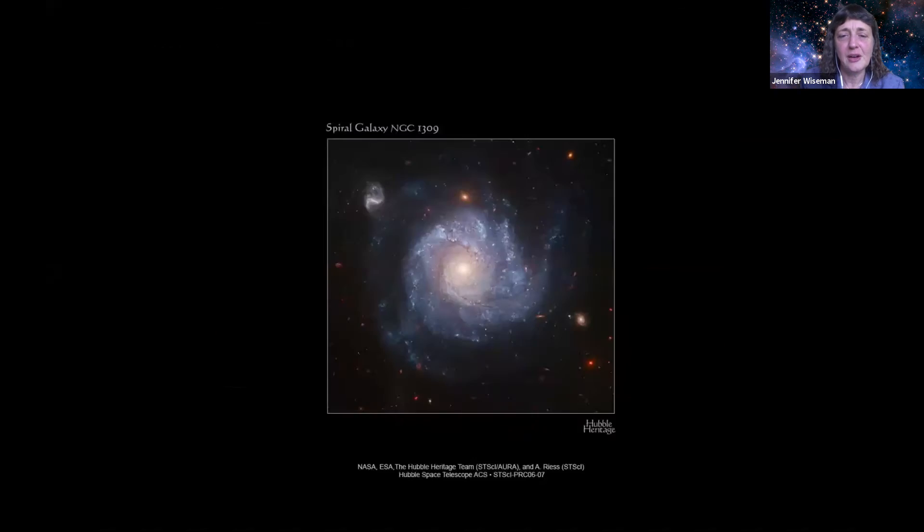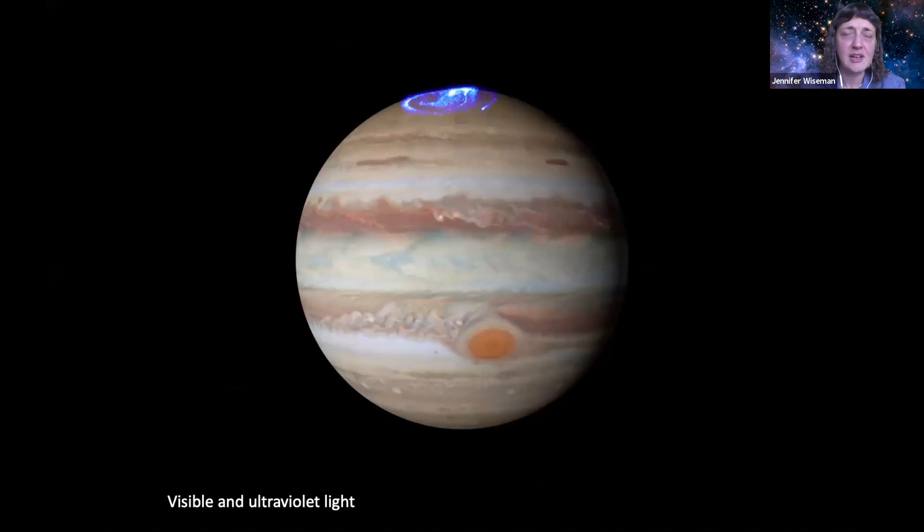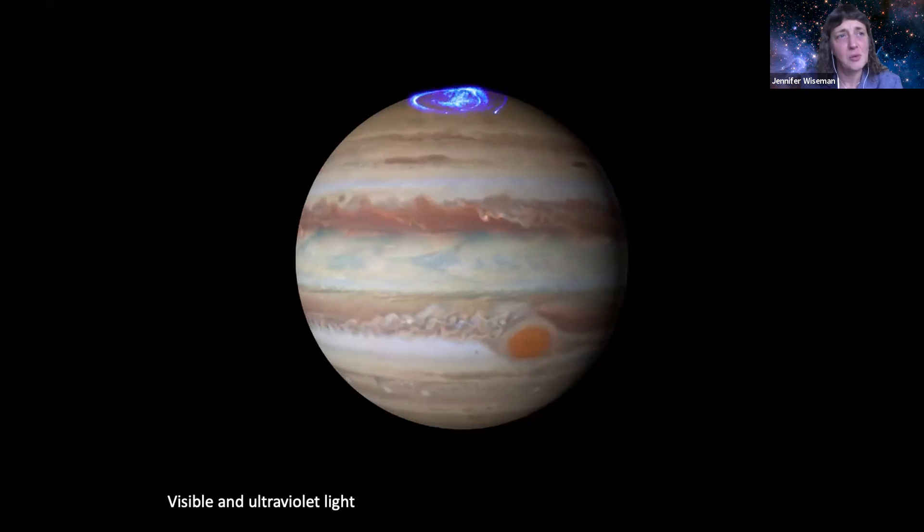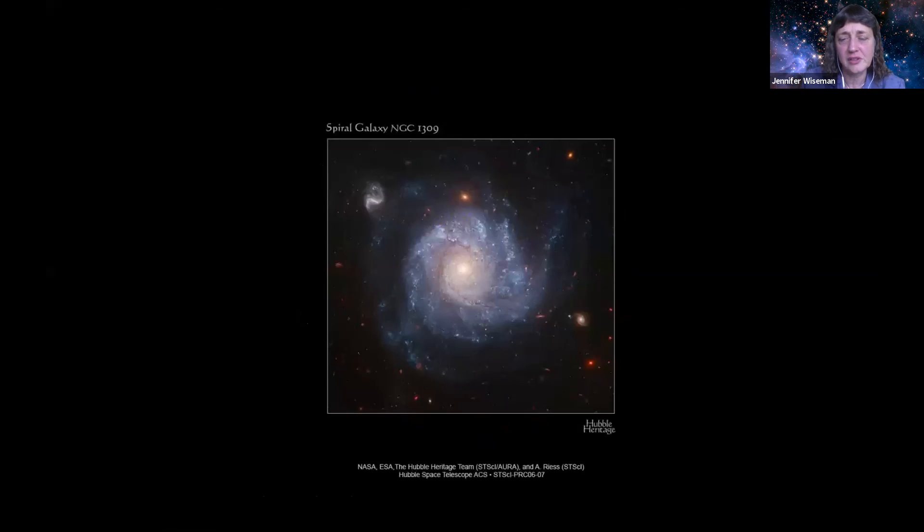And right now we actually have a probe at Jupiter right now, the Juno probe that is orbiting Jupiter, measuring its gravitational and magnetic field, among other things. And so we can correlate Hubble observations with Juno in situ observations and really get a better understanding of what's going on in the Jupiter system, which I think is a wonderful use of complementary work between a probe and the Hubble Space Telescope. We try to do that as much as we can. I've shown you star images within our own galaxy, but we're also, of course, looking at other galaxies. This is a galaxy I kind of pulled at random out of the Hubble archive, but it's a beautiful galaxy, a nice grand spiral.